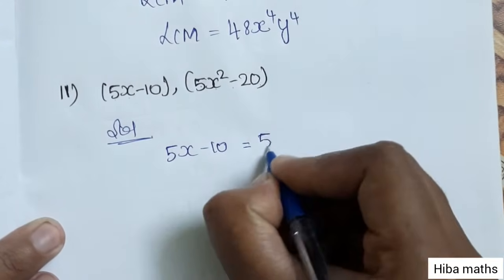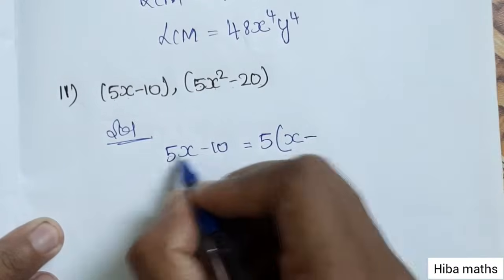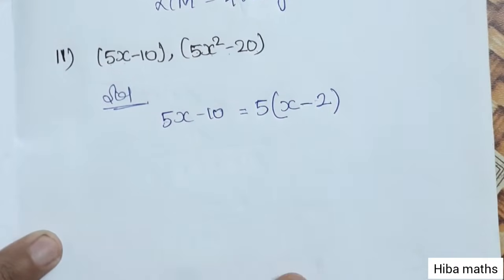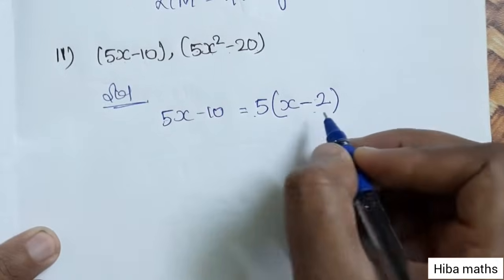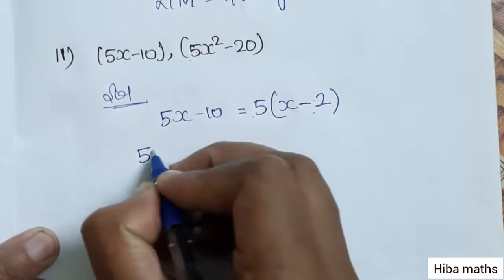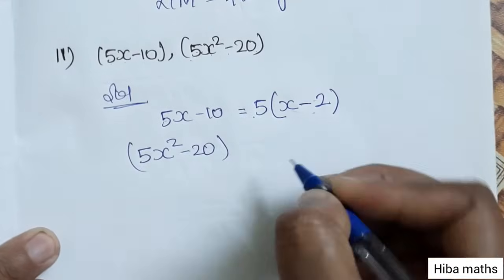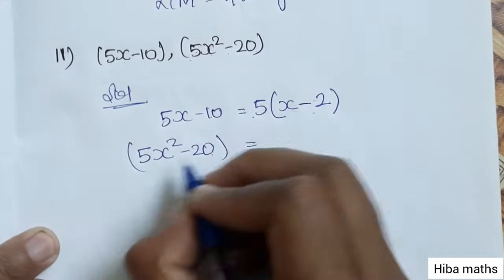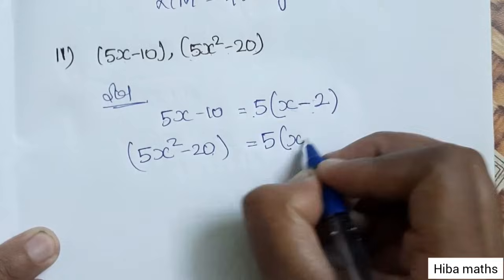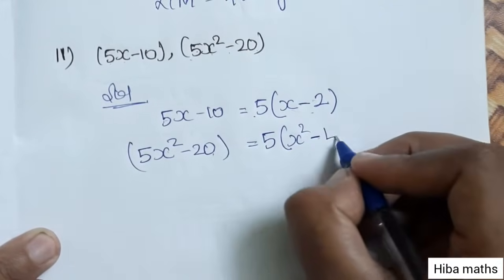5 common gives x minus 2, since 5 times 2 is 10. Now we factorize 5x² minus 20 as 5(x² minus 4), since 5 times 4 is 20.